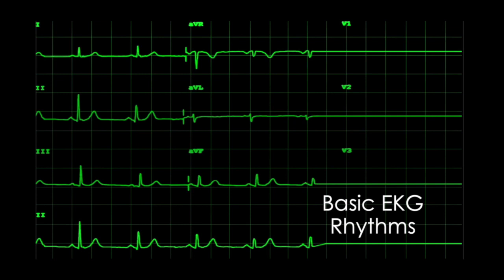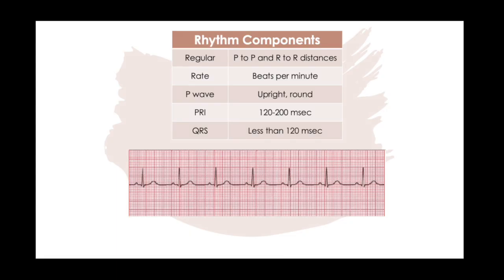Our first lecture was on recording EKGs, and now that we've recorded one, what are we going to do with that? Today we'll talk about basic interpretation. There are really five components to interpreting an EKG: is it regular, what's the rate, what does the P wave look like, what's the PR interval length, and what's the QRS width? When we talk about regularity, we're talking about the distance between the R waves and the distance between the P waves, because each represents different chambers of the heart and areas of the electrical system. When something is regular, it's the same distance between each of those.